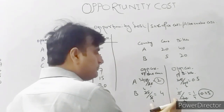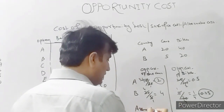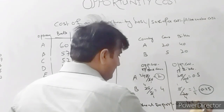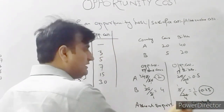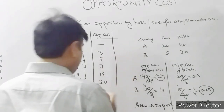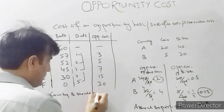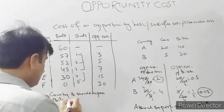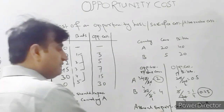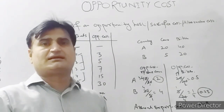So by calculating the opportunity cost, we can conclude that Country A should export cars to Country B, and Country B should export bikes to Country A. In this way, they both will be better off. I hope that the opportunity cost concept is clear. Thank you.